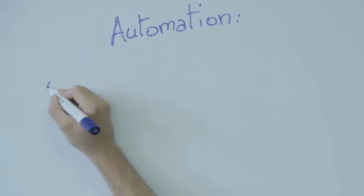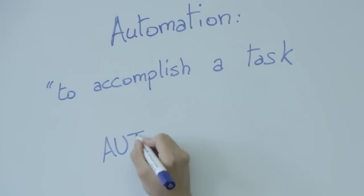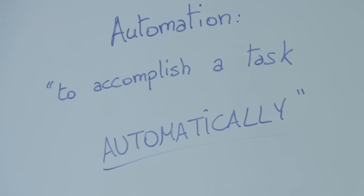Basically, Automation gives you the tools to make something accomplish a task automatically. Whatever the task you are dealing with, you need three fundamental ingredients. The measurement, the control, and the actuation.